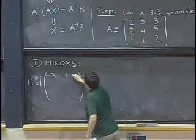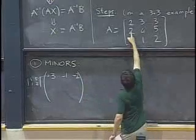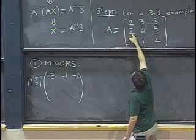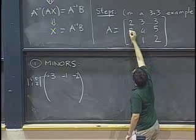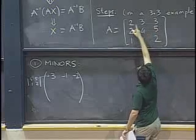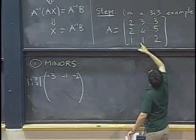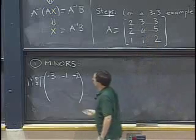Then, minus two. Then, I get to the second row. So, I get to this entry. Well, to find the minor here, I will delete this row and this column. And, I'm left with three, three, one, two. Three times two minus three is three.